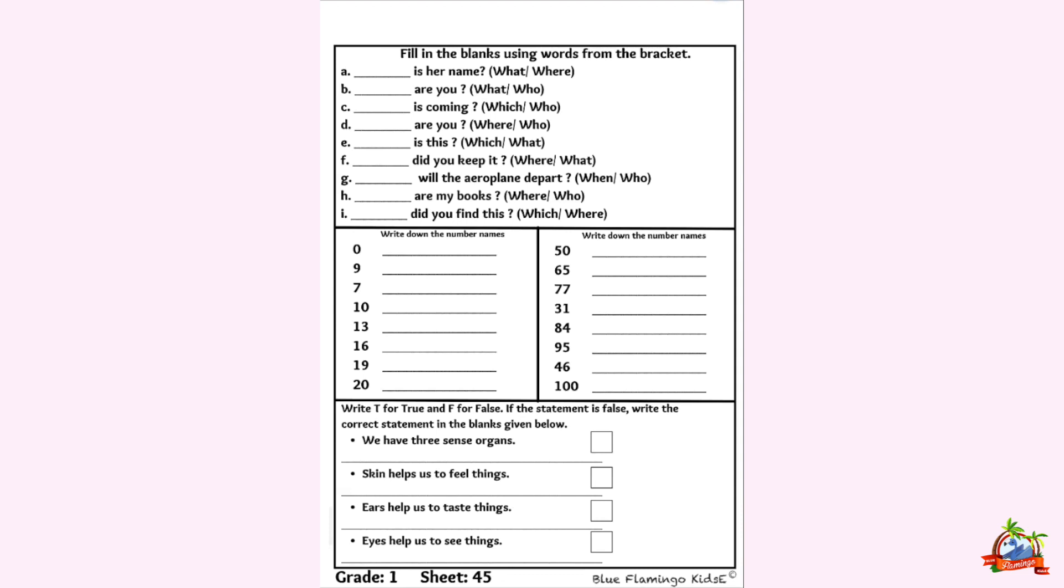Now, let's move to the next and the last section of this sheet which is EVS. Write T for true and F for false. If the statement is false, write the correct statement in the blank given below. We have to write true or false. If the correct statement is true, if the wrong is false. And if the statement is false, then what is the correct statement? The sentence is, we have three sense organs. Humari paas sirf teen sense organs hain. Is it true? No, we are having five sense organs. This statement is false. And we have five sense organs. F-I-V-E, five. Five sense organs.